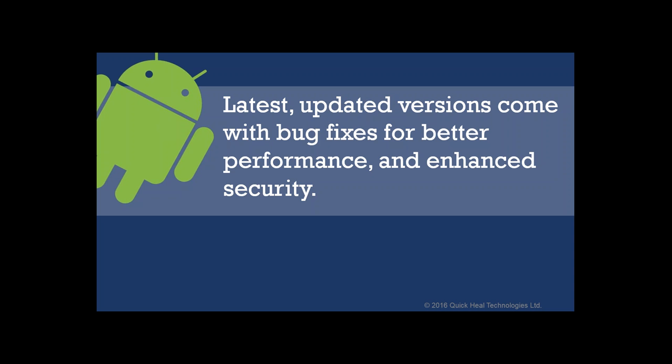A lot of phones come with Android 5 which can be upgraded to Android 6, also known as Lollipop. Not everyone knows this. Whenever you check if an upgrade is available, go to your phone's Settings, then 'About Phone' or 'About Device,' where you'll be able to see if there is any upgrade or update available.